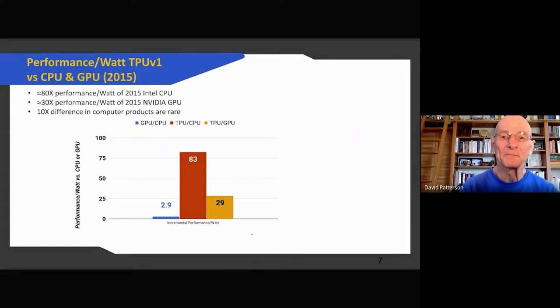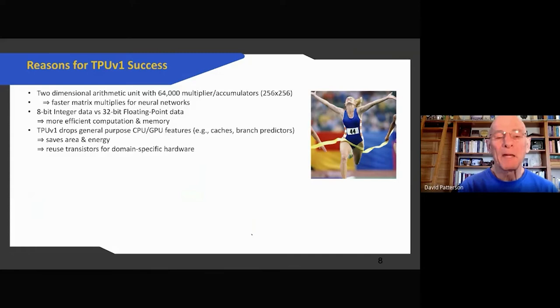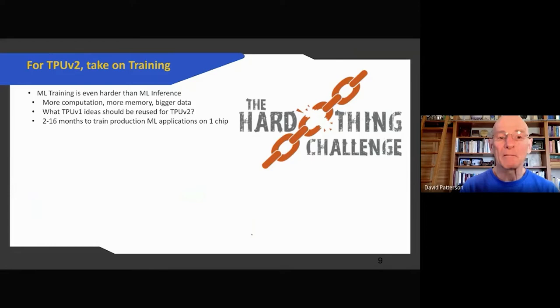Why was it successful? First of all, an amazing number of arithmetic units. It has 256 by 256 arithmetic units, 64,000 multiply accumulators. Secondly, they were doing work on 8-bit integer data rather than 32-bit floating data, so it can be more energy efficient and take less memory capacity and be faster. And because it was domain-specific, it dropped a lot of the general-purpose features that dominate CPUs and GPUs like caches and branch predictors. This saves area and energy and lets the transistors get reused for domain-specific hardware.